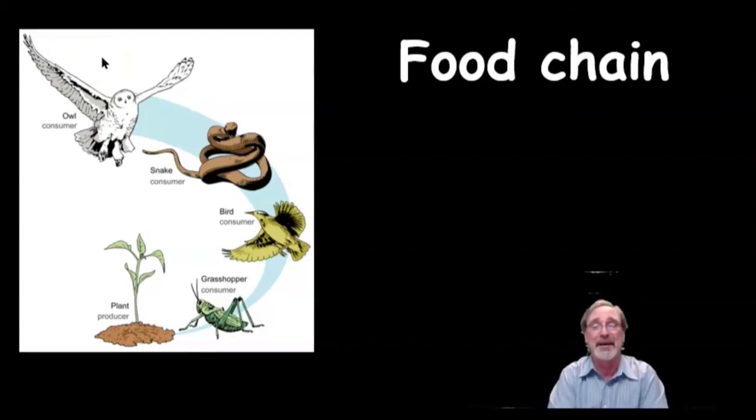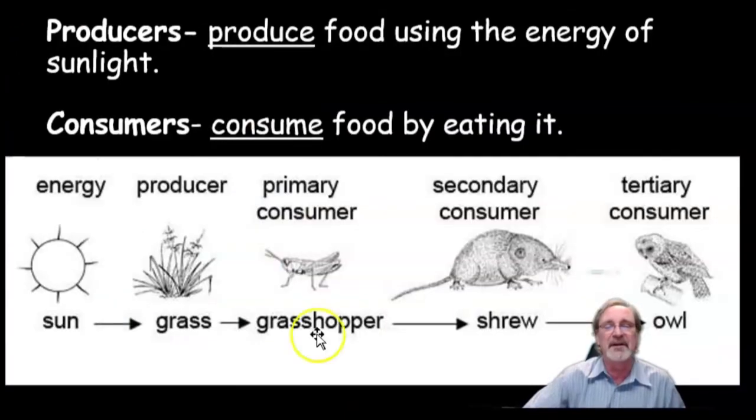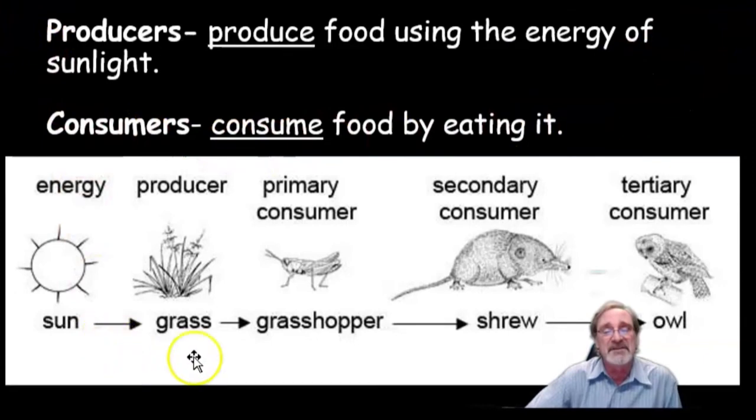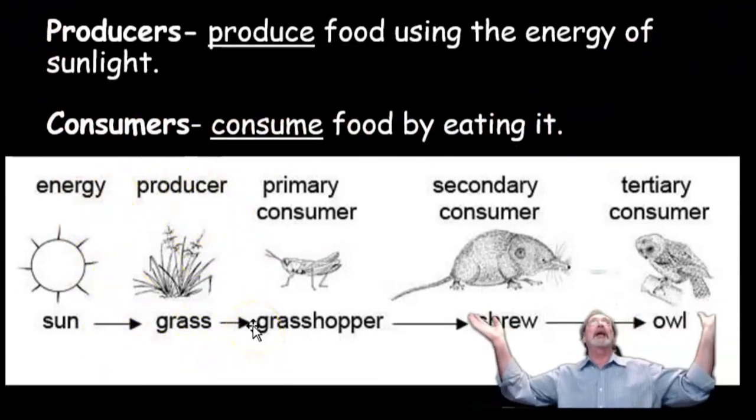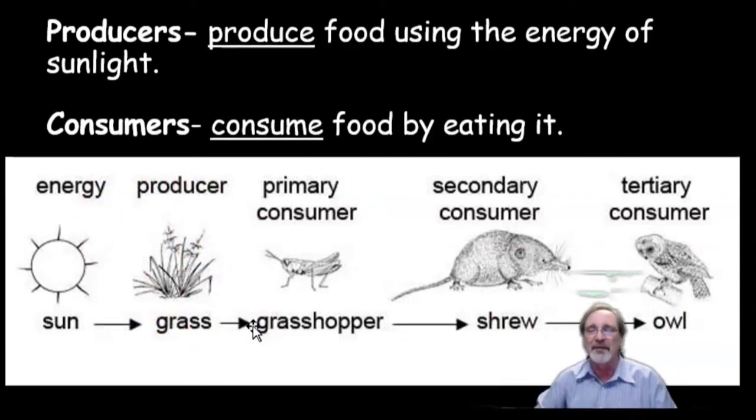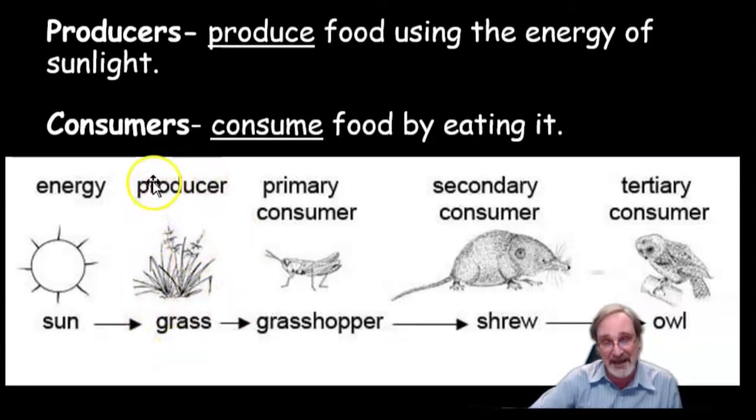Looking at the food chain here with the vocabulary - if it's white you got to write it down. The producer is the grass, it produces the food, or the tree. Then the caterpillar eats the leaves, consuming what the tree produced. So the producer is the plant doing photosynthesis, getting the energy from the sun.